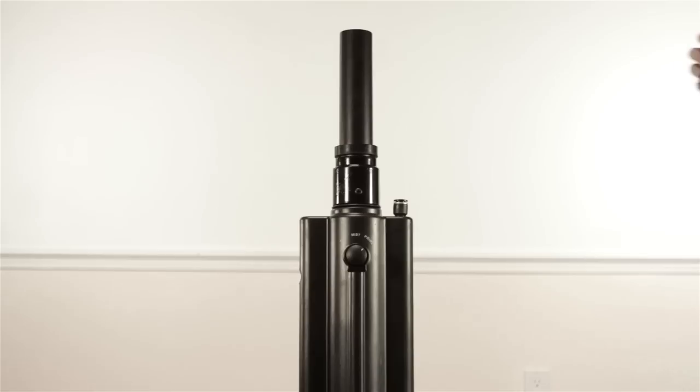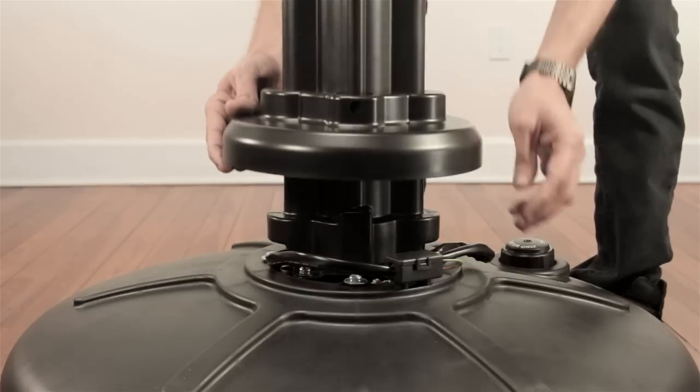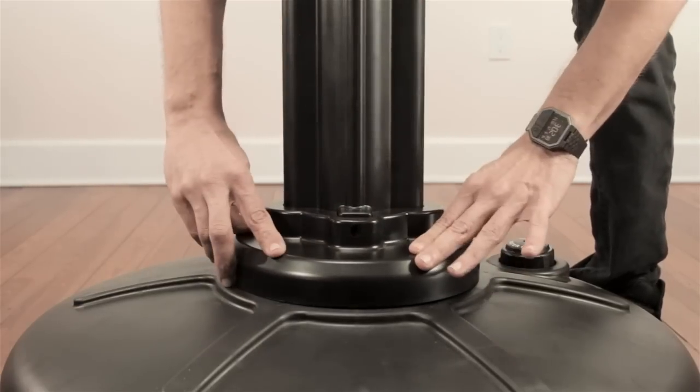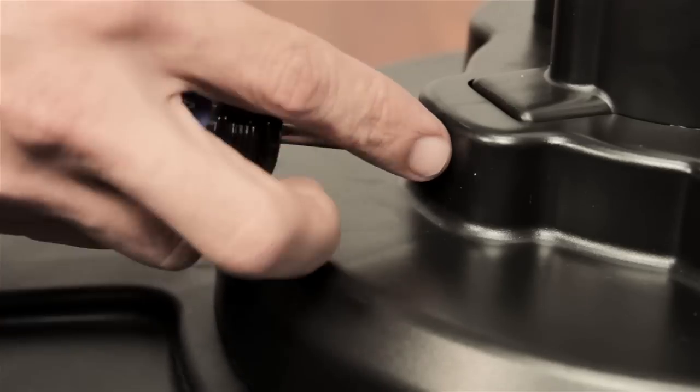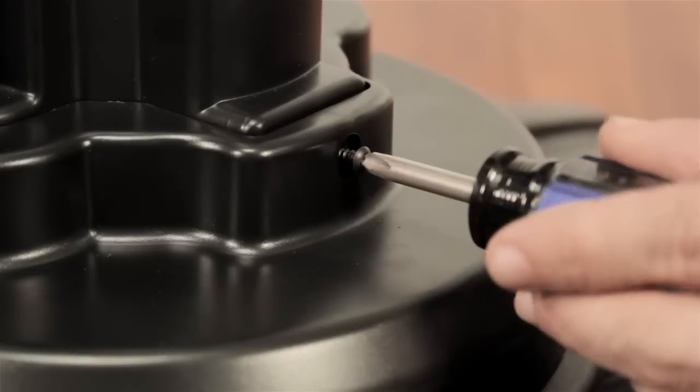Step 5. Slide the base cover onto the Brisa's fan pole assembly. Fasten the front and back of the Brisa's base cover to the fan pole assembly with the two screws supplied in bag 3.